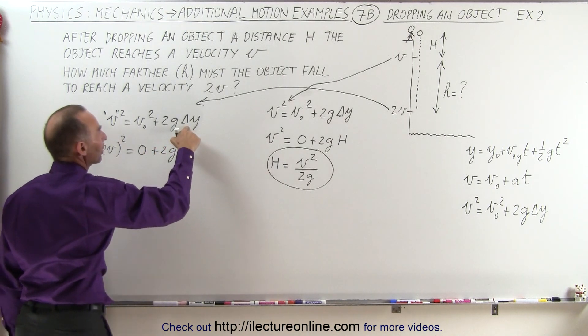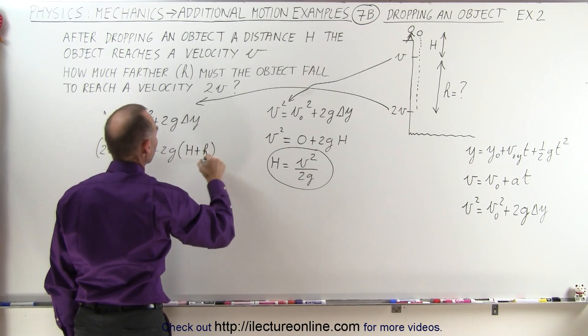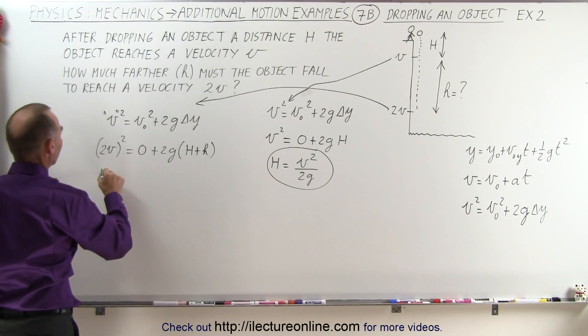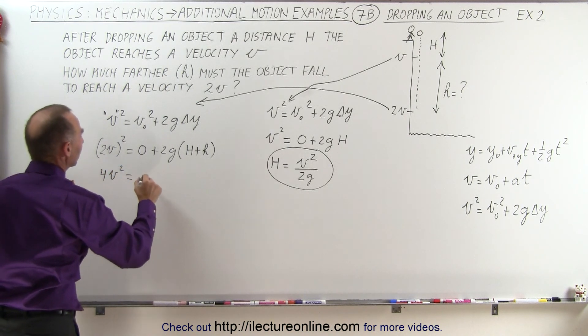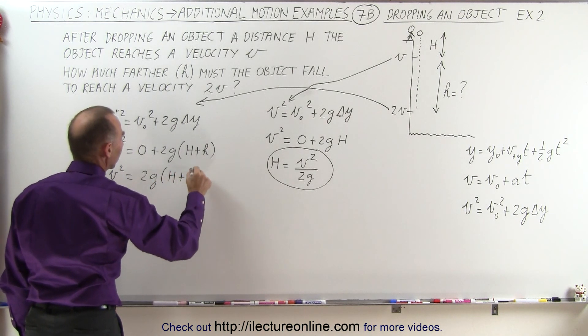and here the delta y will be big H plus small h, H plus little h. And so here what we get is we get 4v² is equal to 2g times H plus little h.